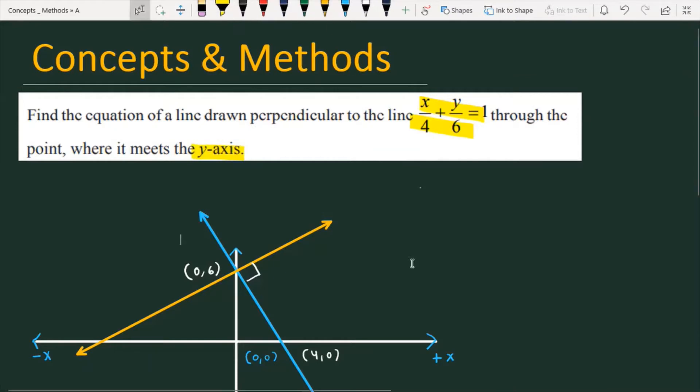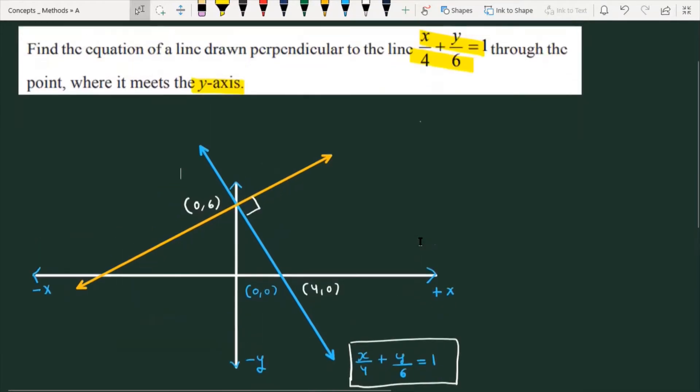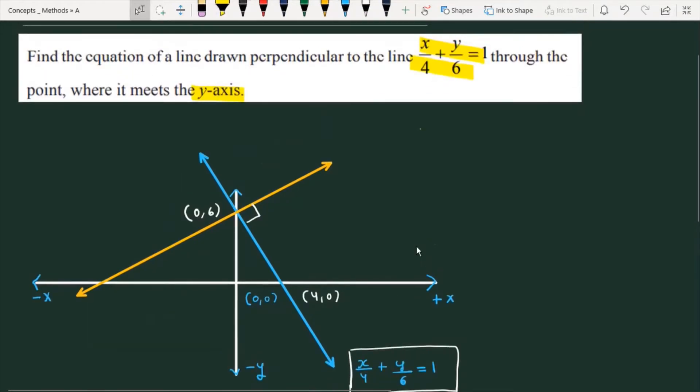First, I will explain the question. It is provided that a line has the equation x/4 + y/6 = 1.